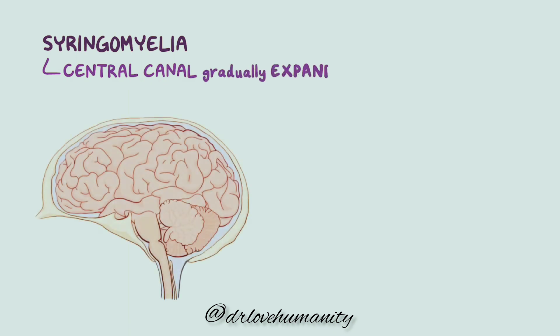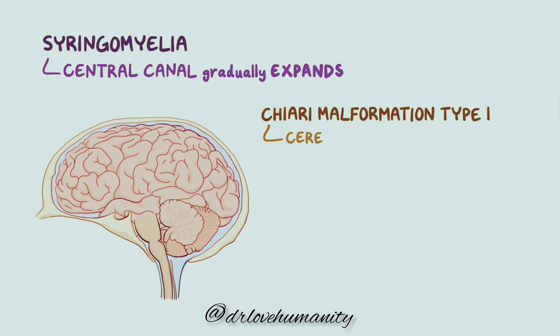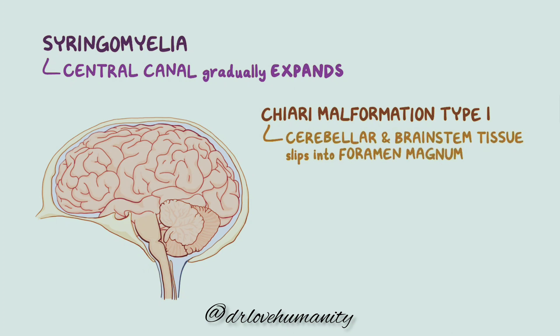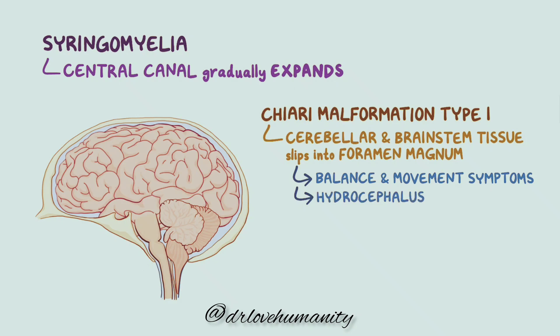In syringomyelia, the central canal of the spinal cord that houses the cerebrospinal fluid gradually expands. This expansion may be caused by acquired factors, but the main cause of syringomyelia is a congenital condition called Chiari malformation type 1. In this condition, the cerebellar and brain stem tissue slip down into the foramen magnum, the opening at the base of the skull. This malformation results in a variety of balance and movement symptoms related to the cerebellum and usually results in hydrocephalus, an abnormal accumulation of cerebrospinal fluid in the brain.